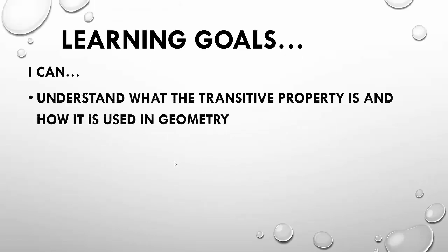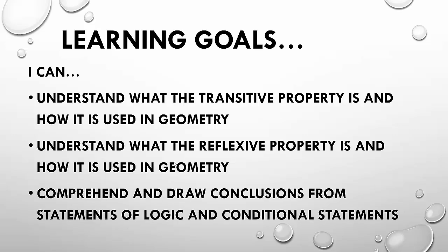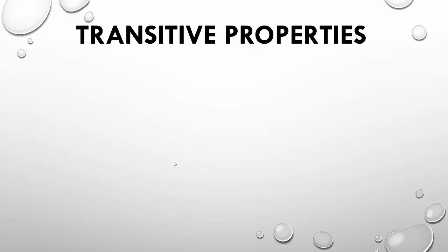So, Learning Goals. I can understand what the transitive property is and how it is used in geometry. Understand what the reflexive property is and how it is used in geometry. And comprehend and draw conclusions from statements of logic and conditional statements. Seems like a lot. It's not terrible, though.